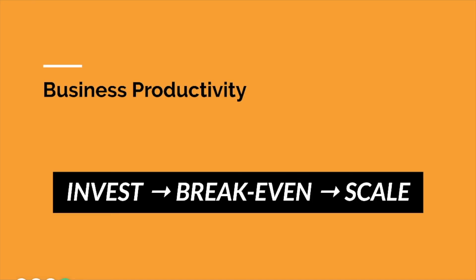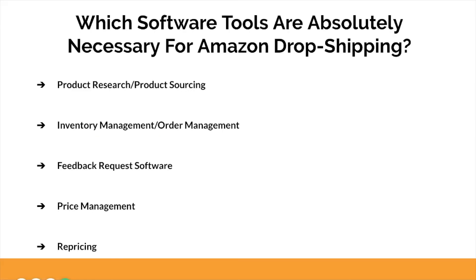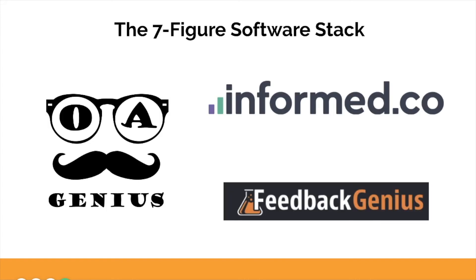Now, business productivity: invest, breakeven, scale. What are you investing in? You're investing in powerful software that will save you money in the future. This will help you keep organized, manage your business efficiently, and these softwares will be the backbone of your business. We've developed a seven-figure software stack to make sure your back end is set up properly. The tools you'll need are: a product research software, inventory management and order management software, a feedback request software, price management software, and a repricing software.